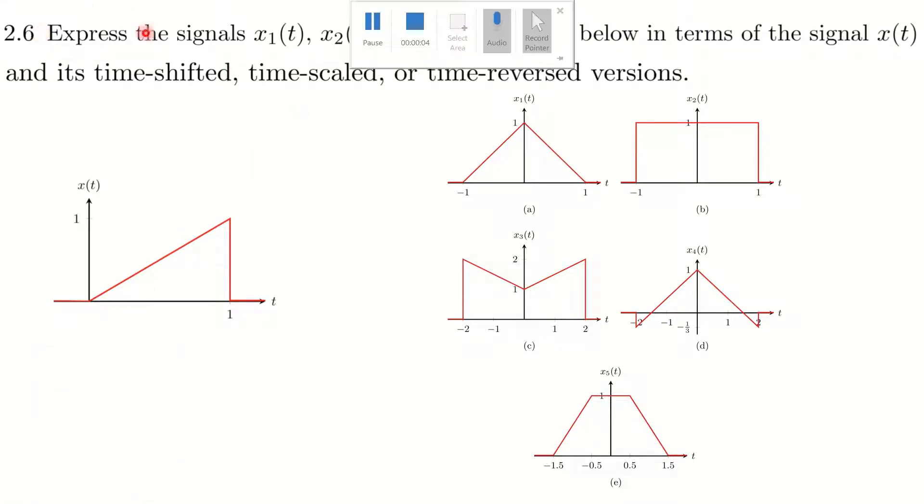Okay, question 2.6. We have x(t) here, this signal x(t) equals t when t is between 0 and 1, but x(t) equals 0 if t is bigger than 1 or smaller than 0. The question is, can we create x1(t) to x5(t) using x(t)? We can also do some operations like time shift, time scale, and time reversed. I mean, we can use the time-shifted, time-scaled, and time-reversed version of x(t) to build these signals.